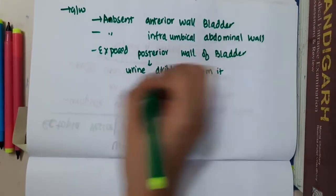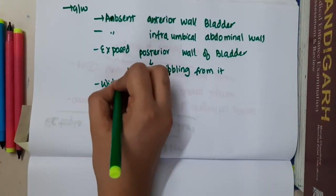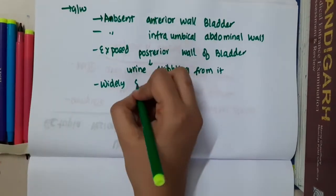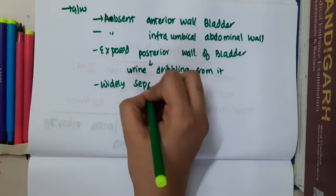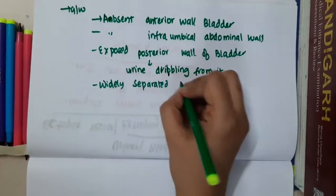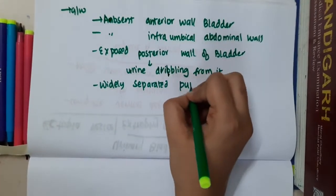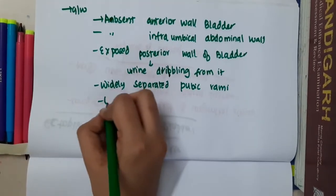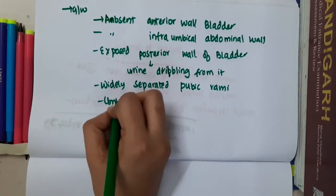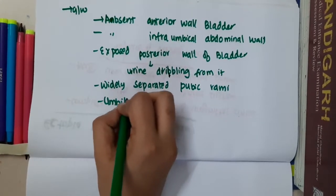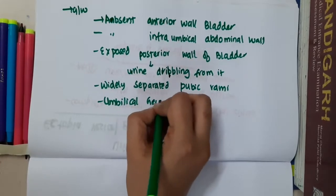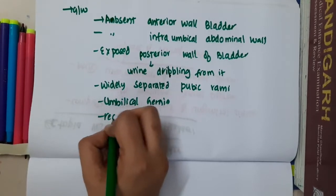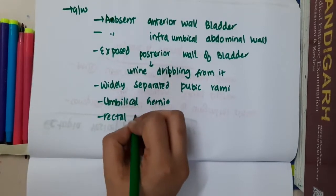You will also see presence of widely separated pubic rami. The patient will also have umbilical hernia and rectal prolapse.